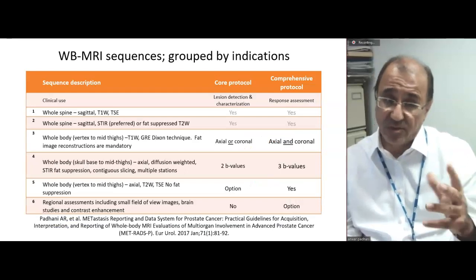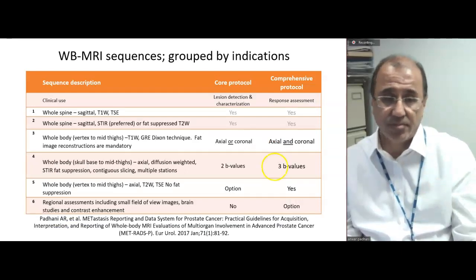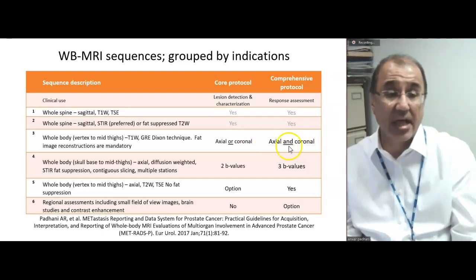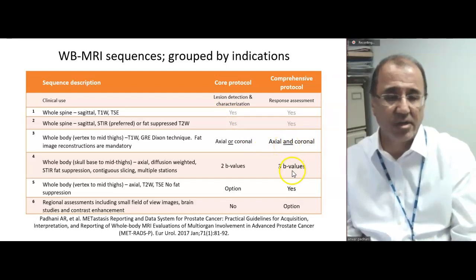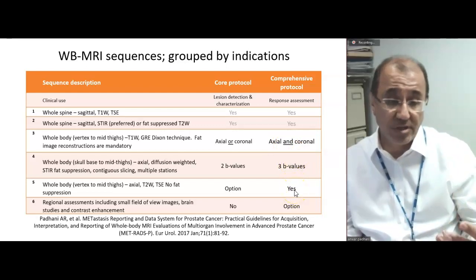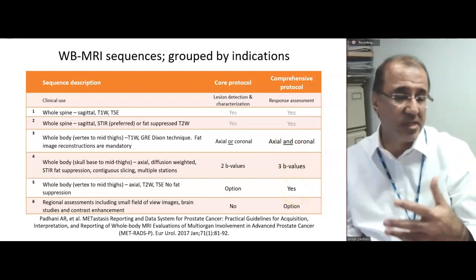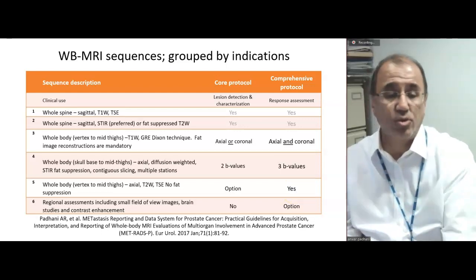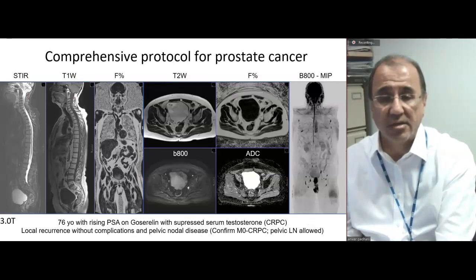The comprehensive sequence is slightly different. We continue to do sagittal T1 and T2 sequences, but the T1 Dixon technique is done in both axial and coronal planes. An additional b-value is acquired, and a T2 sequence is also done axially for registration purposes. You may or may not also do regional evaluations of the brain, which I'll talk about in a few seconds.